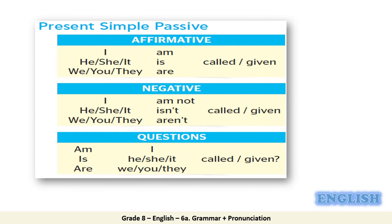Now let's have a look at the following table. In this table, you will learn how to change sentences from active into passive in the present simple tense. For example: I am called or given; he/she/it is called or given; we/you/they are called or given — using the past participle. Negative: I am not called; he/she/it isn't called; we/you/they aren't called. In questions: Am I called? Is he/she/it called? Are we/you/they called?